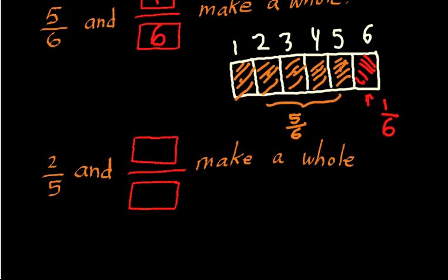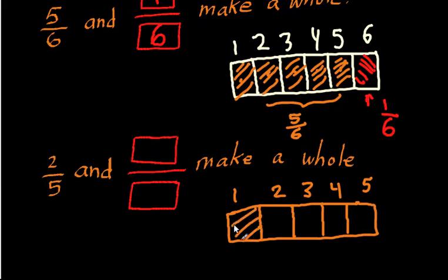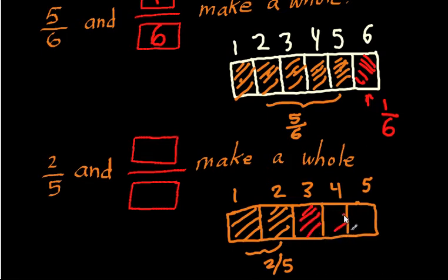This time I'm going to do two-fifths and blank over blank make a whole. How can I divide something up into five equal-sized pieces? I'll be boring again and draw a nice rectangle. Now I've broken it up into five pieces — let's count: one, two, three, four, five. Two-fifths would be represented by shading two of these pieces — this gives me two over five. And what remains are three more pieces. So these three pieces, again out of five, together with the two out of five give me back the whole.